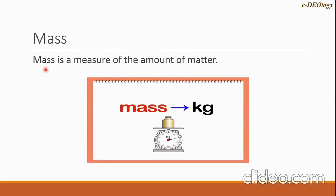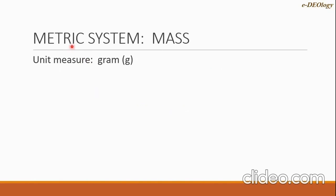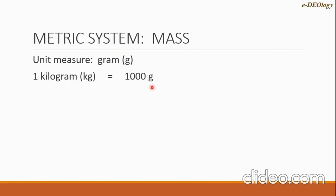Now let's go to mass. Mass is defined as a measure of the amount of matter. For the metric system, the unit of mass is the gram, with symbol g (small g). The first unit is kilogram, with symbol kg. One kilogram equals one thousand grams — the word 'kilo' means thousand, which matches the value of one thousand.